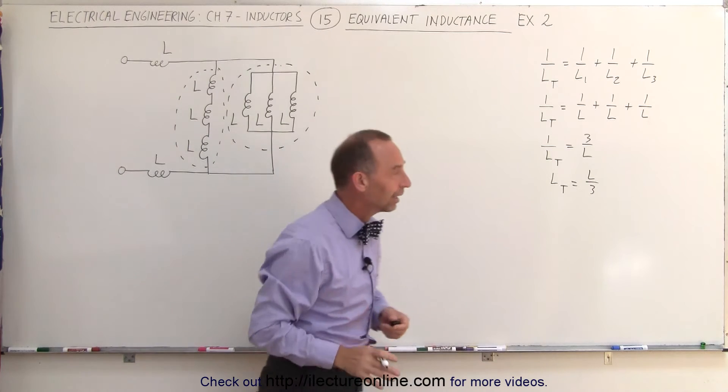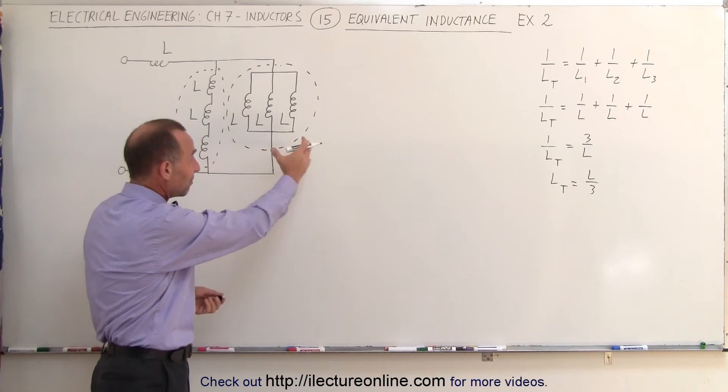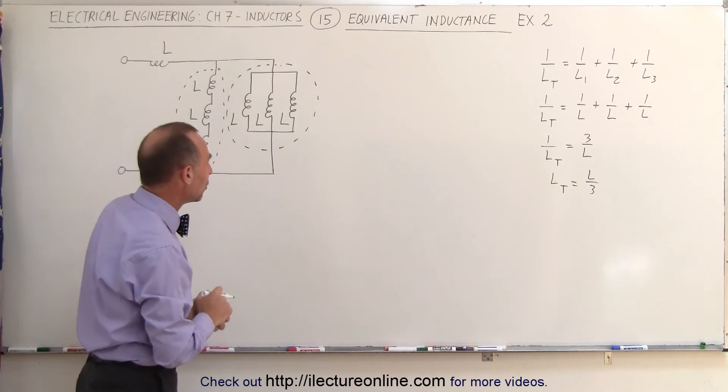That's where we have that trick. It's one third. Of course, if there's four in parallel, it would be one fourth. If there's five in parallel, all the same value, it would be one fifth, the value of any one of them.